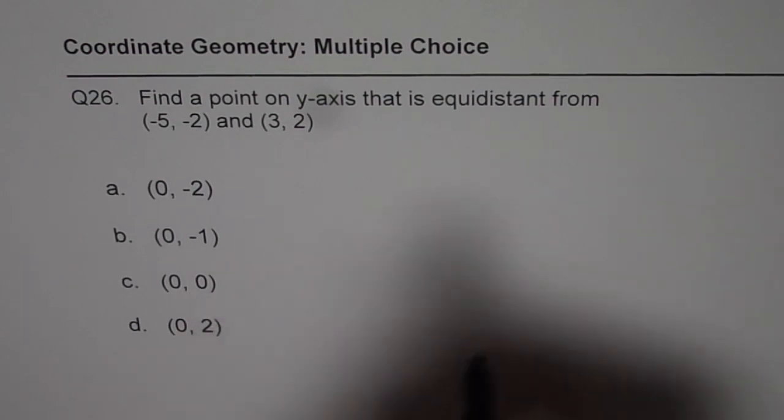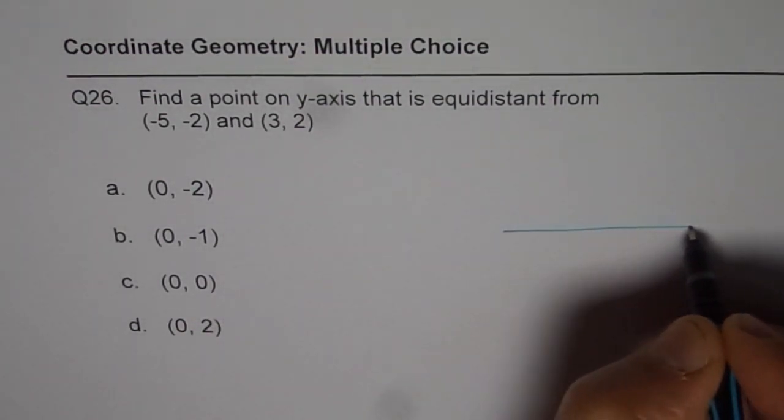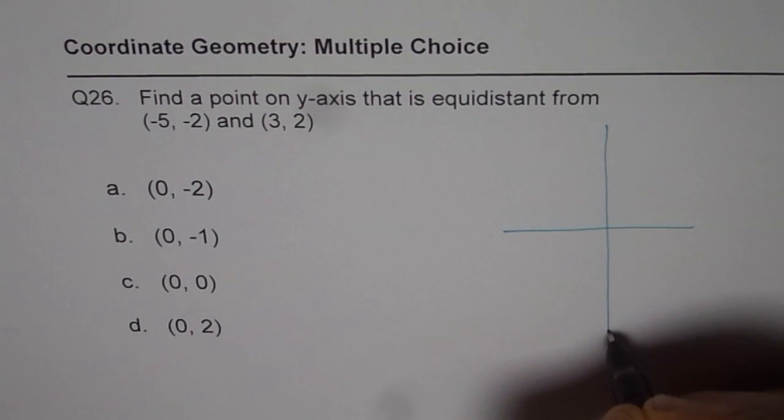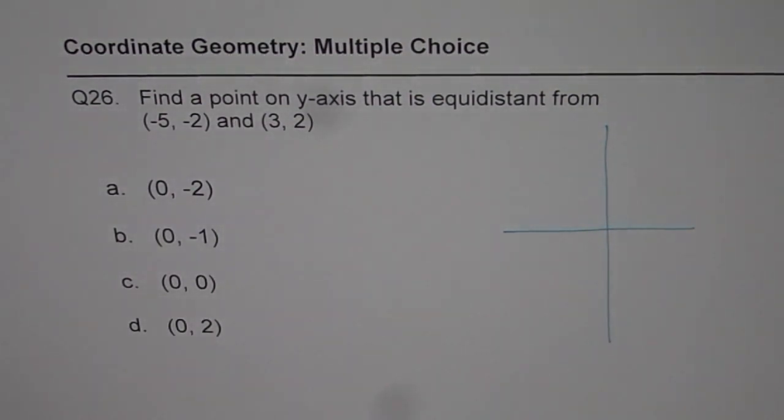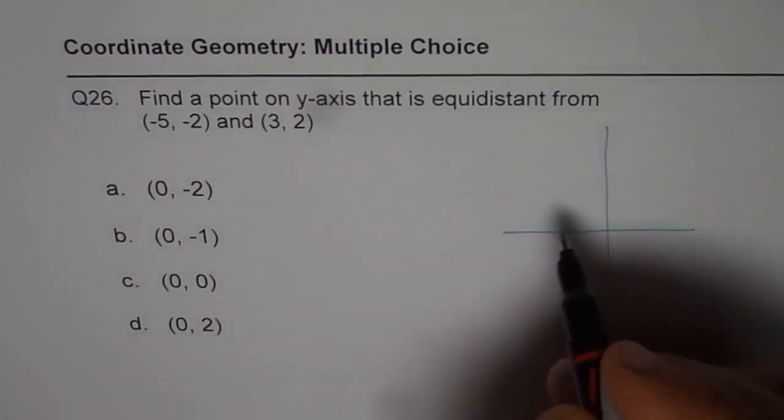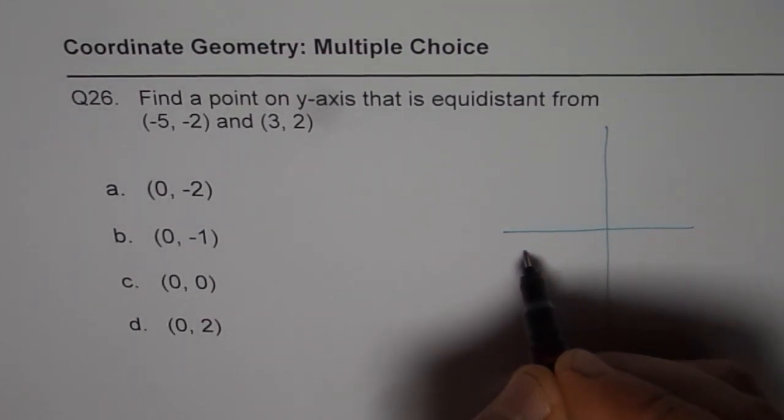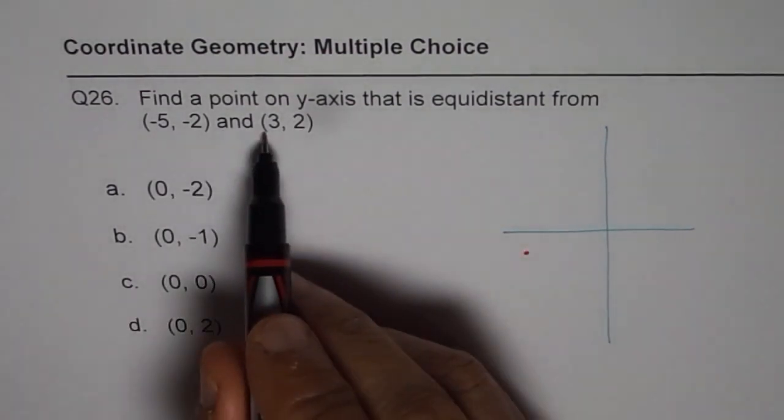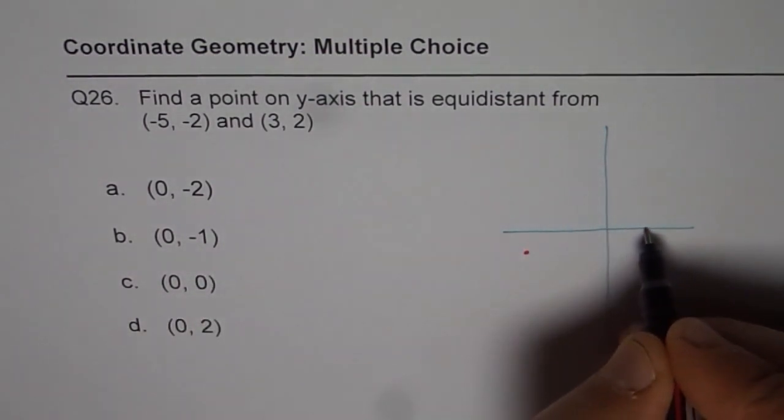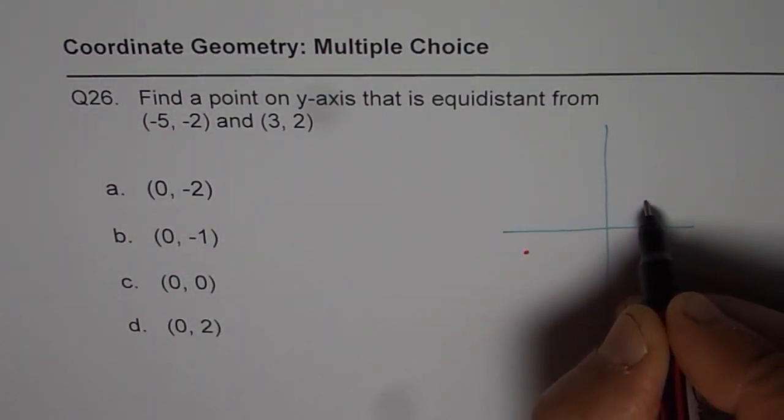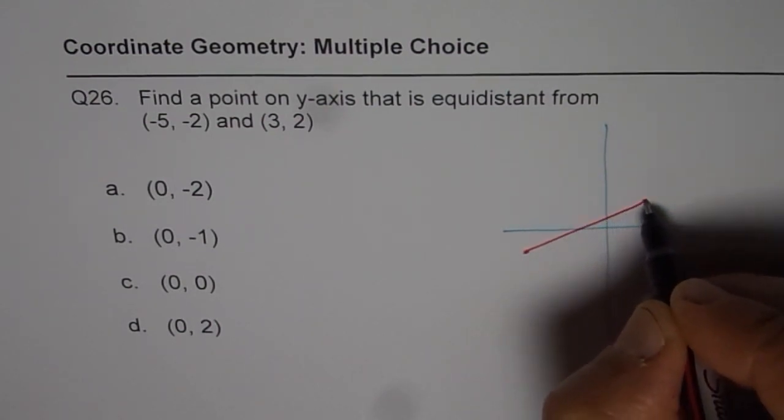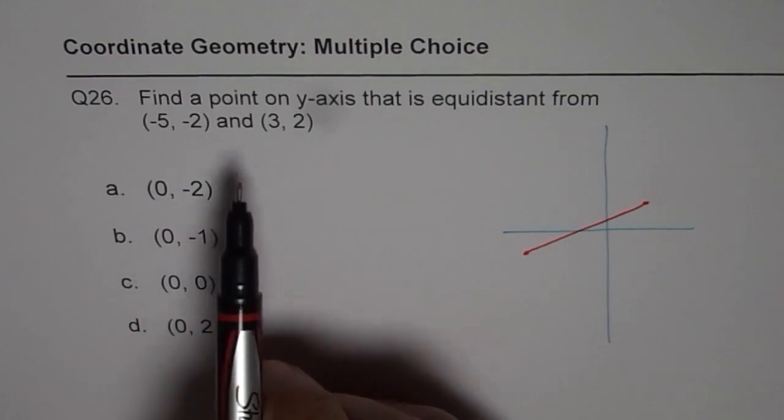So what we can do here is, let me first give you a sketch so that things are very clear to you what we are trying to do. It is a very rough sketch but it gives us a fairly good idea. We are given two points here. The first one is (-5, -2), let's say this point is kind of here. And the second one is (3, 2), somewhere here. So if we join this, we get our line segment.